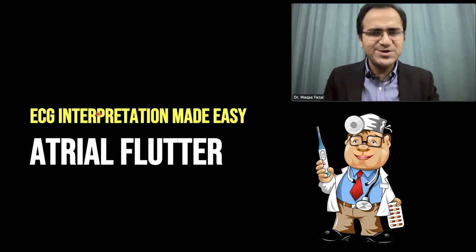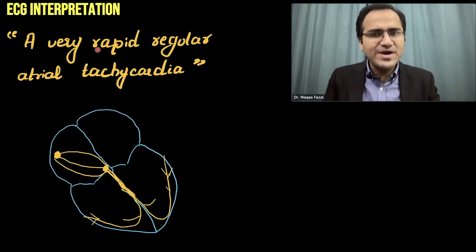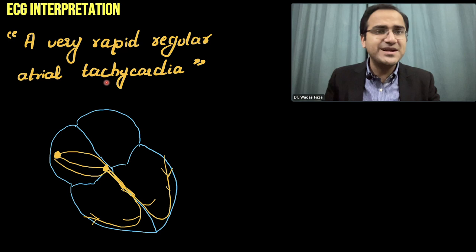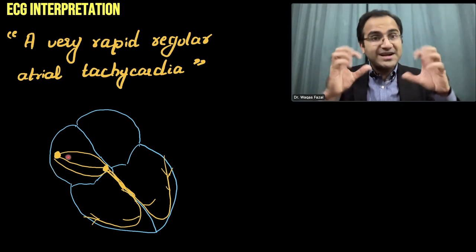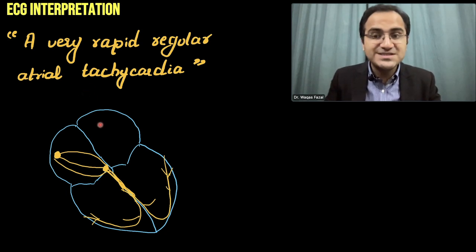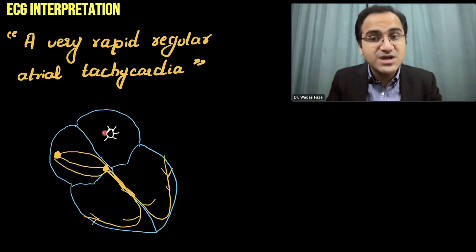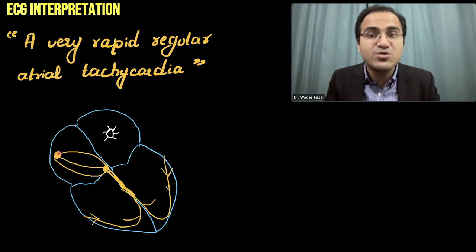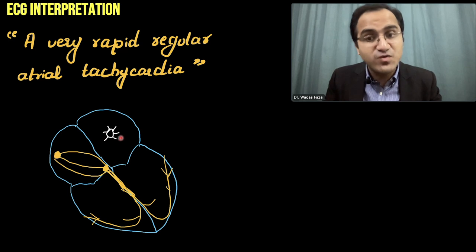In our video series of ECG interpretation made easy, in this video we are going to talk about atrial flutter. Atrial flutter is a very rapid regular atrial tachycardia — the contraction of atria at a very rapid rate. The atria are not contracting due to the firing of the SA node. In atrial flutter, an ectopic focus appears within the atria and generates abnormal electrical currents causing atrial contractions at such a fast pace that it results in atrial tachycardia.